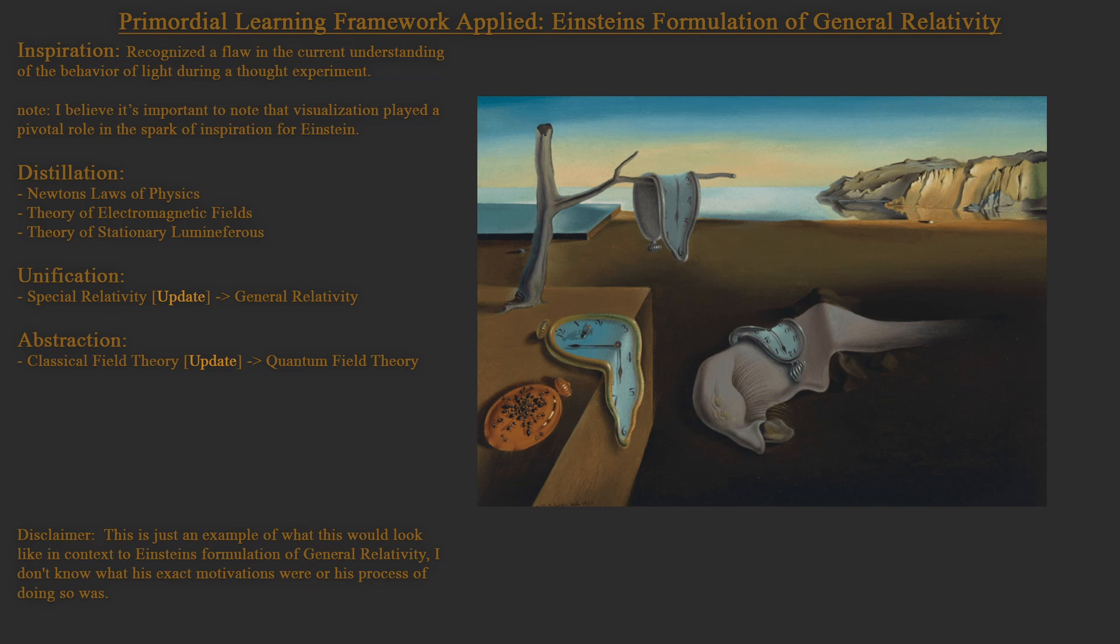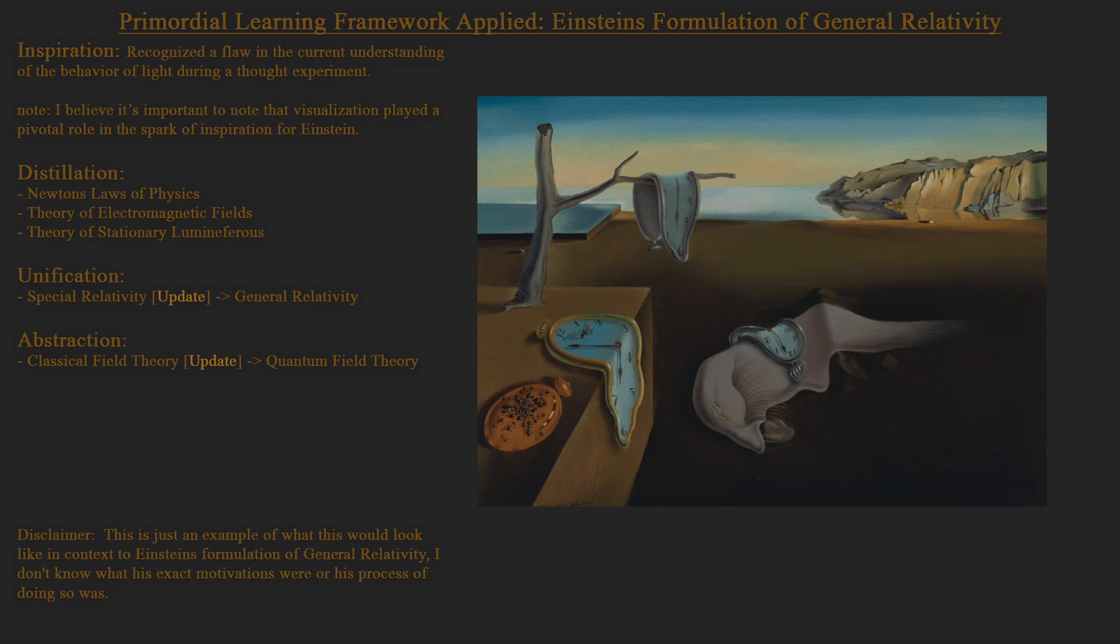Update in this context is basically re-running whatever unification you made back through the process of discovery and updating your model essentially with newer information. And then abstractions from that was like Classical Field Theory, which then again updated to Quantum Field Theory.